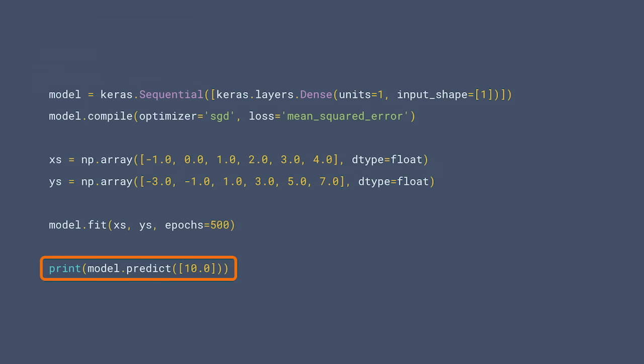Well, the computer was trained to match only six pairs of numbers. It looks like a straight line relationship between them for those six, but it may not be a straight line for values outside of those six. There's a very high probability that it's a straight line, but we can't be certain. And this probability is built into the prediction, so it's telling us a value very close to 19 instead of exactly 19.